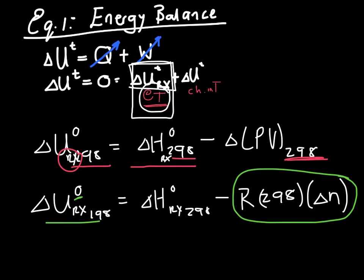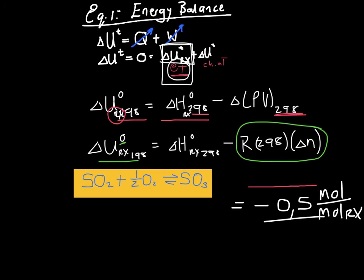Do not be tempted to write this change in the number of moles in terms of the equilibrium epsilon. This refers to the change in the number of moles per mole of reaction. It is therefore simply equal to the sum of the stoichiometric numbers in your reaction equation, which in our case is minus 0.5 mole per mole reaction.